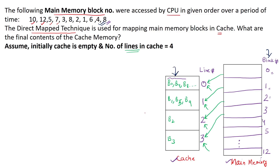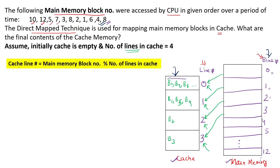In the direct map technique, to find which cache line a given main memory block goes into, we use the formula: cache line number = main memory block number mod number of lines in the cache. If there are only a few blocks (like 0 to 3), we can directly tell, but for larger numbers of memory blocks we use this formula.